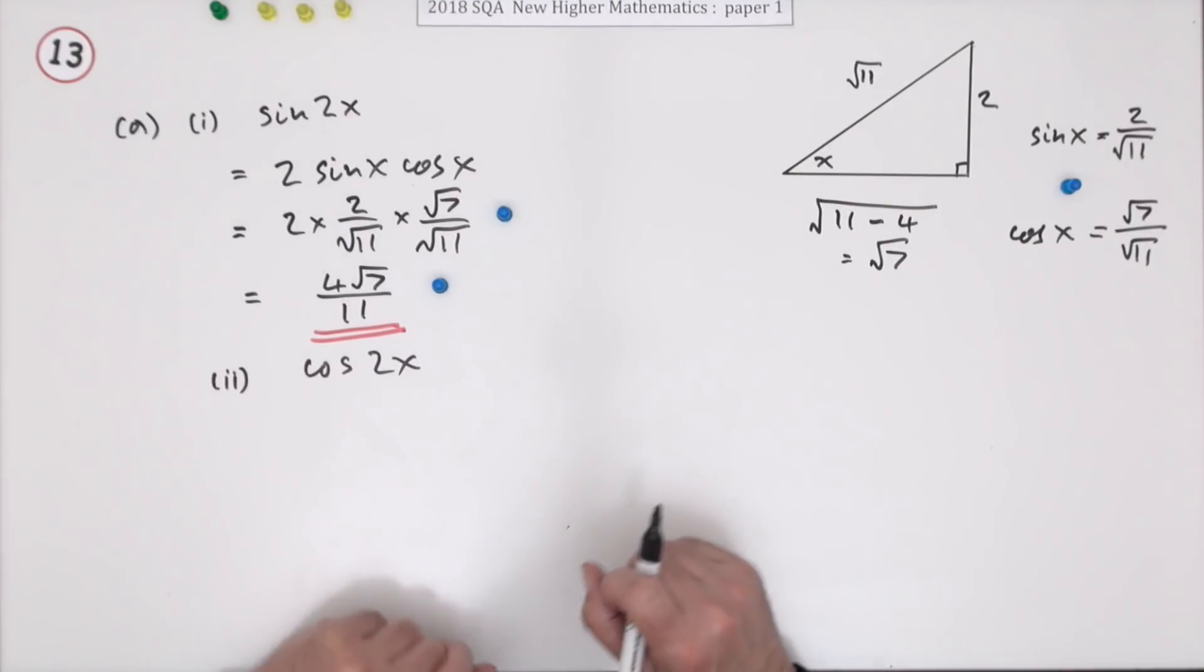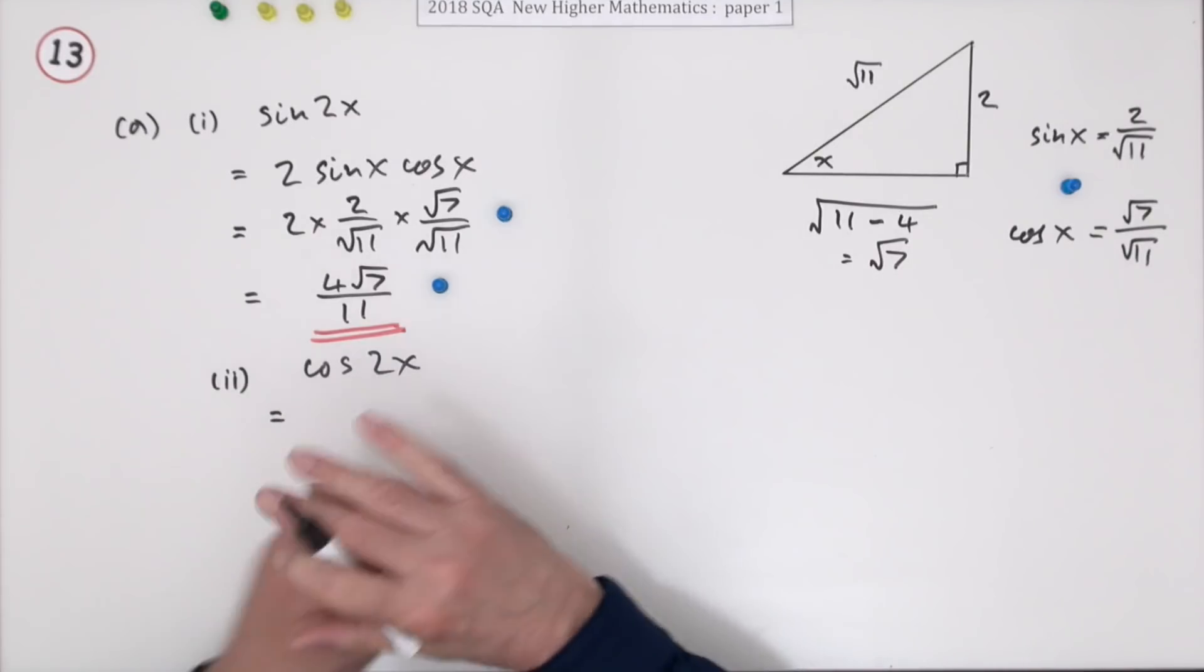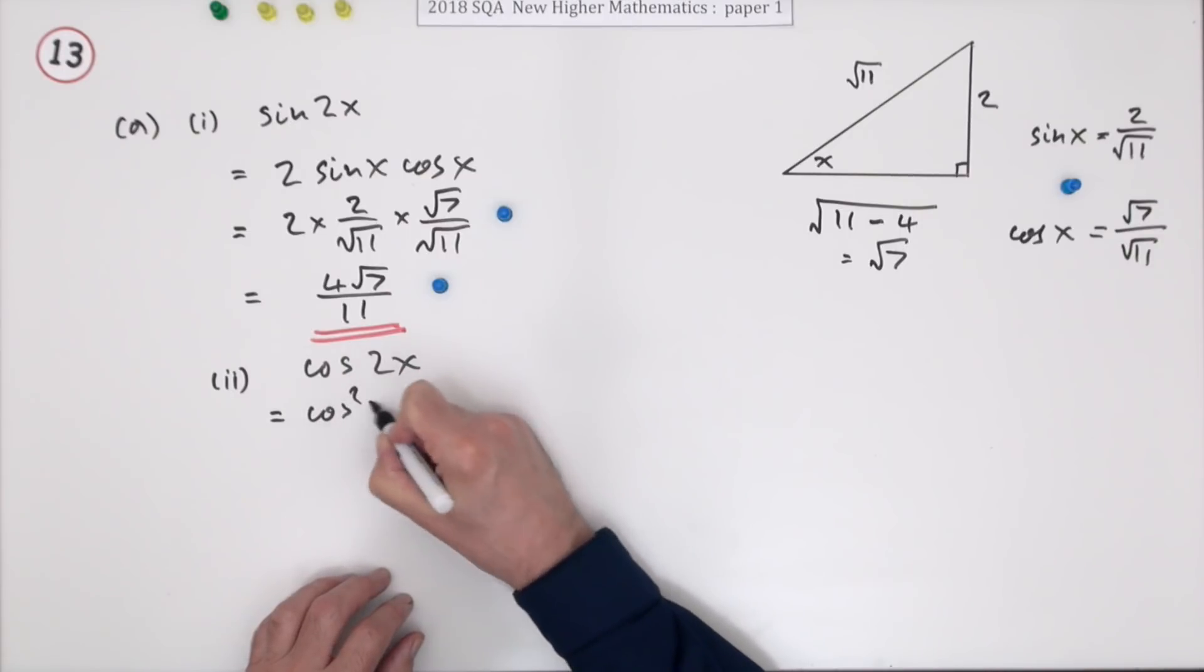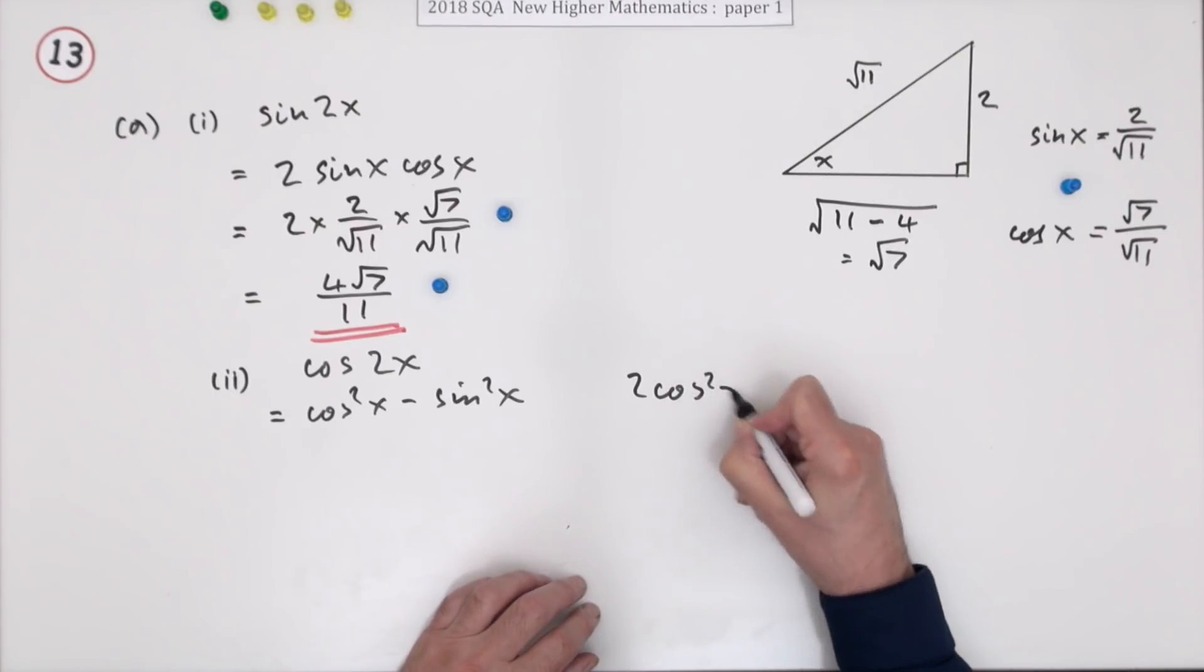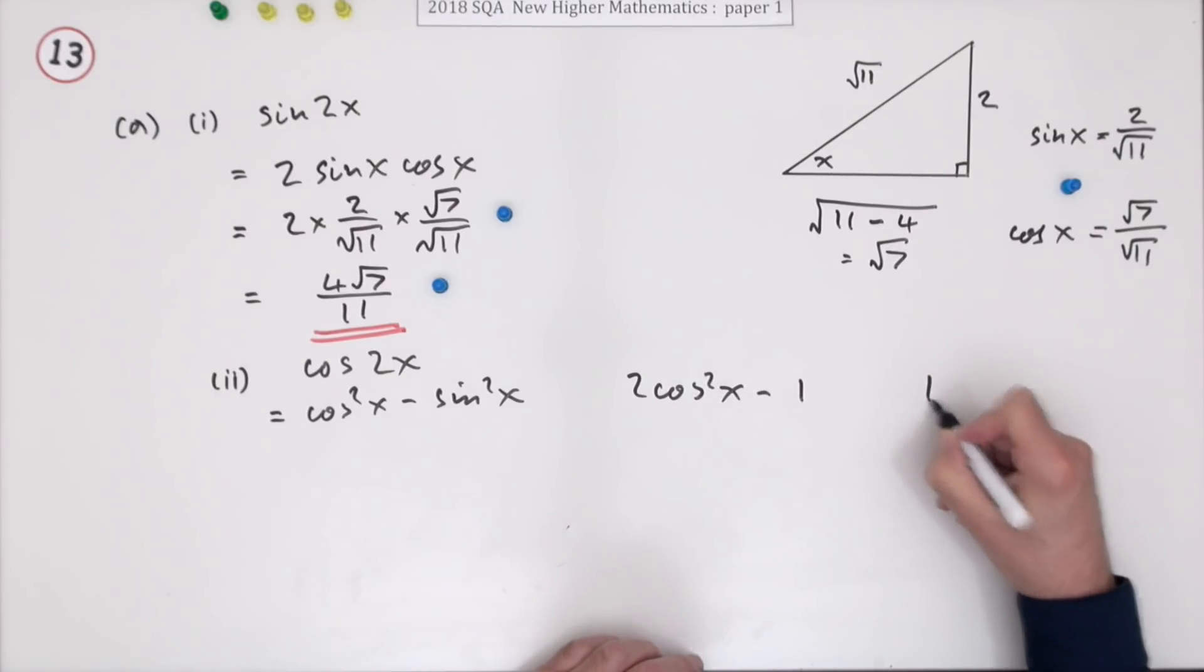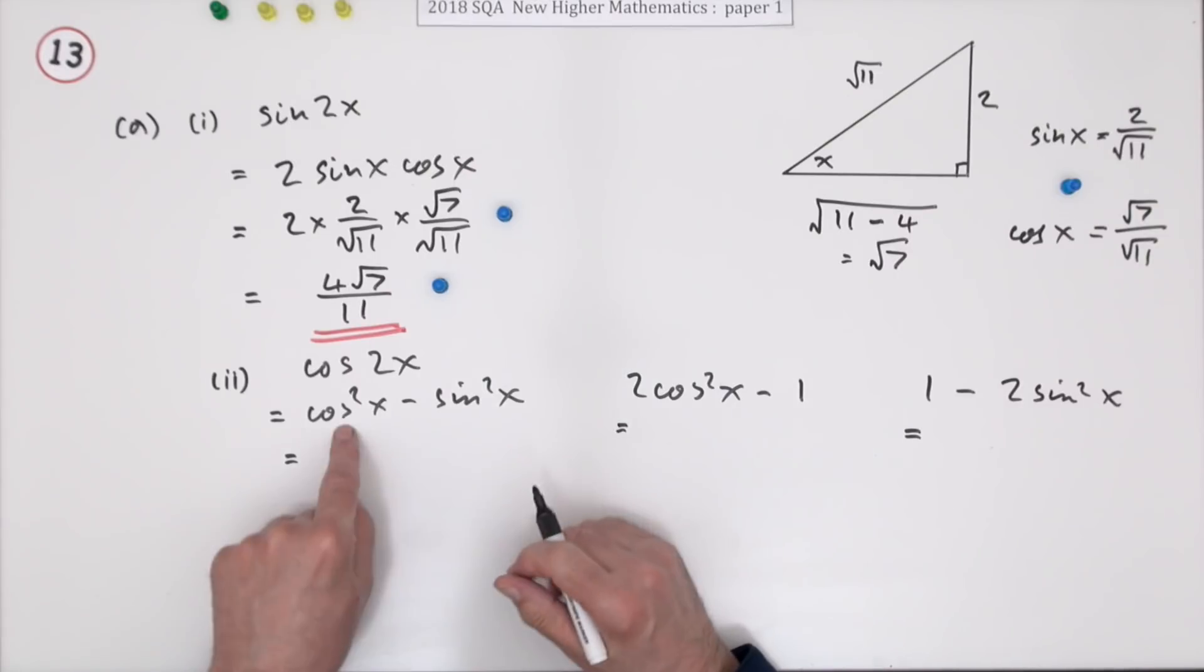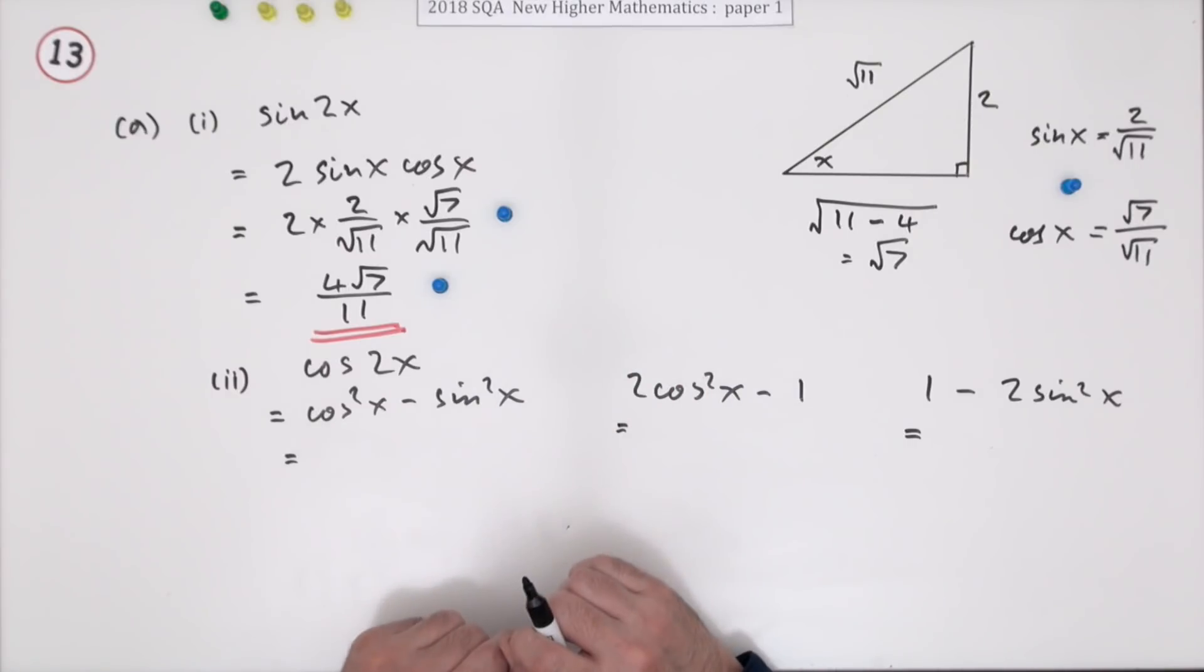Now part 2: find the cos of 2x. You'll look at the front and you're sort of spoiled for choice, but you can use whichever one takes your fancy. You can use cos squared x minus sine squared x, you can use 2 cos squared x minus 1, or you can use 1 minus 2 sine squared x, because they're all the same as each other. Sine squared and cos squared makes 1.